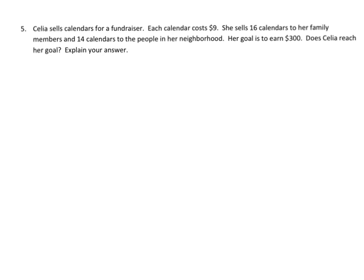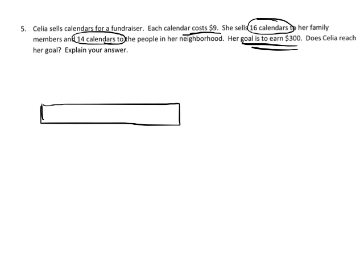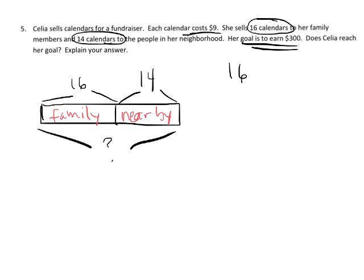The last problem: Celia sells calendars for a fundraiser. Each calendar costs $9 — that's an important number, so I'll underline it. She sells 16 calendars to her family and 14 calendars to people in her neighborhood. Her goal is to earn $300. I'm going to draw a tape diagram showing all the calendars — 16 to family and 14 to the neighborhood. How many did she sell total? That's 16 plus 14.